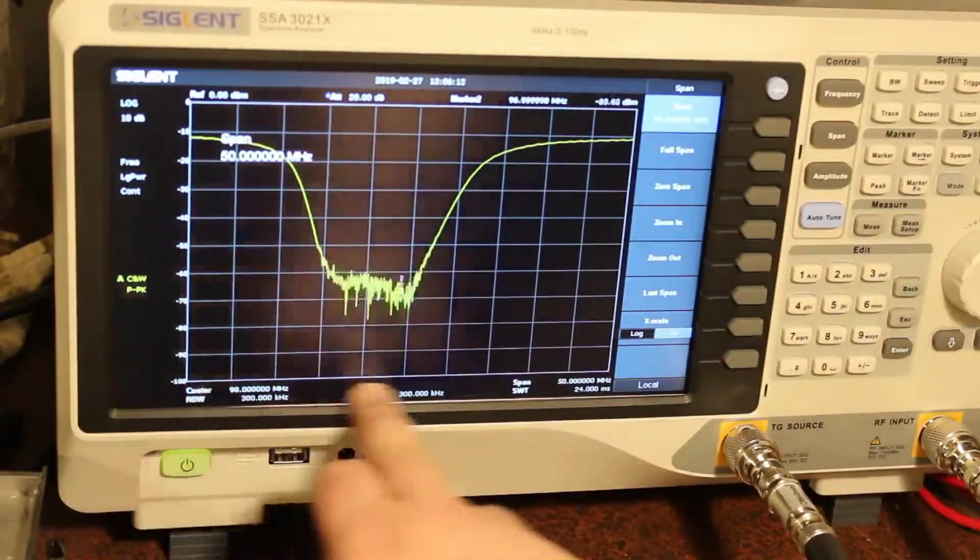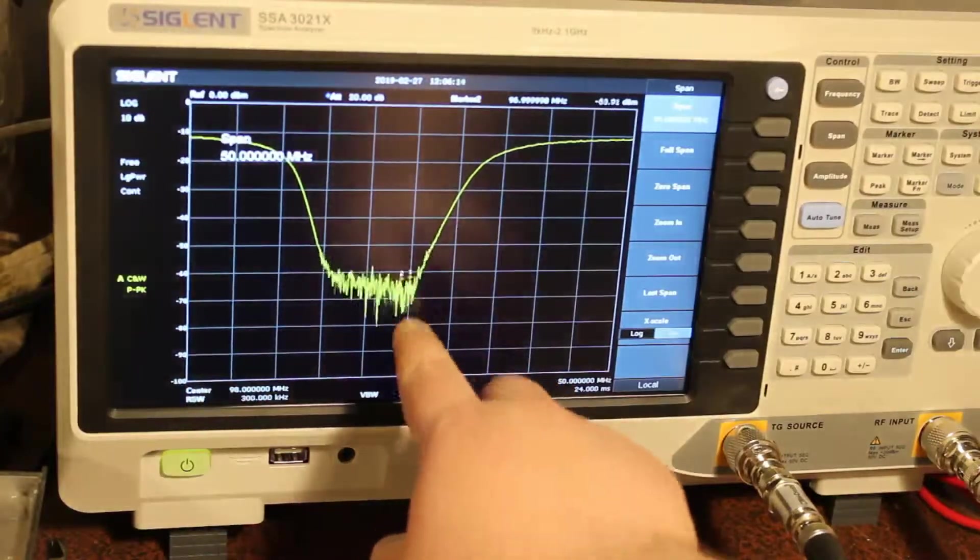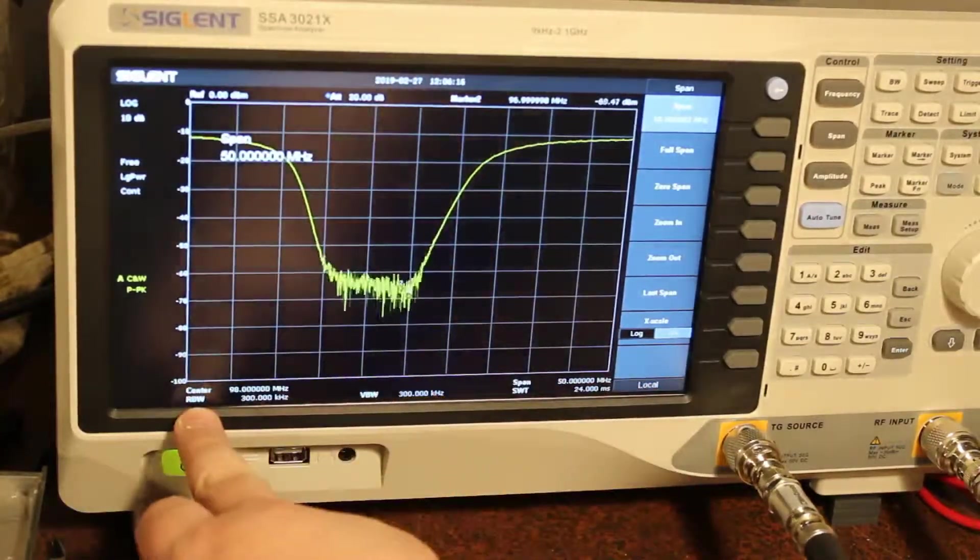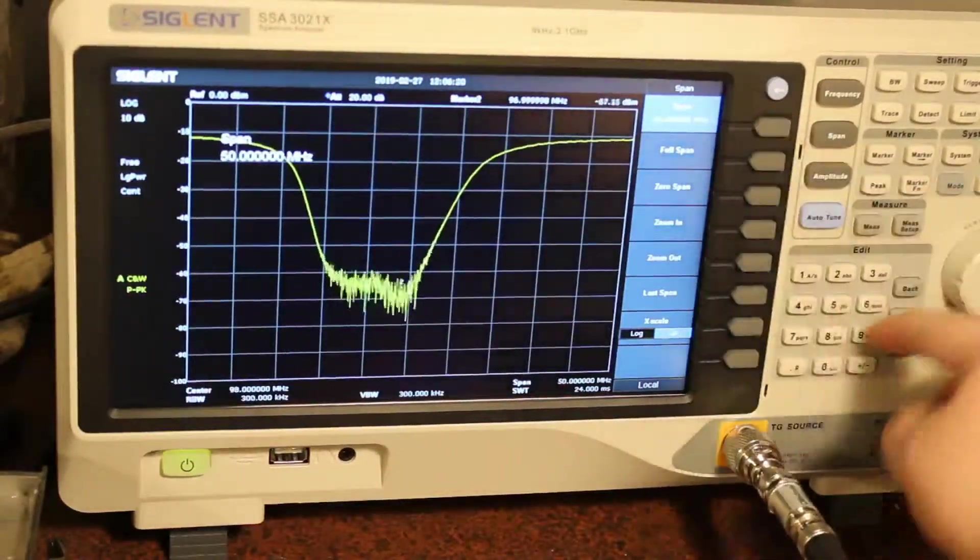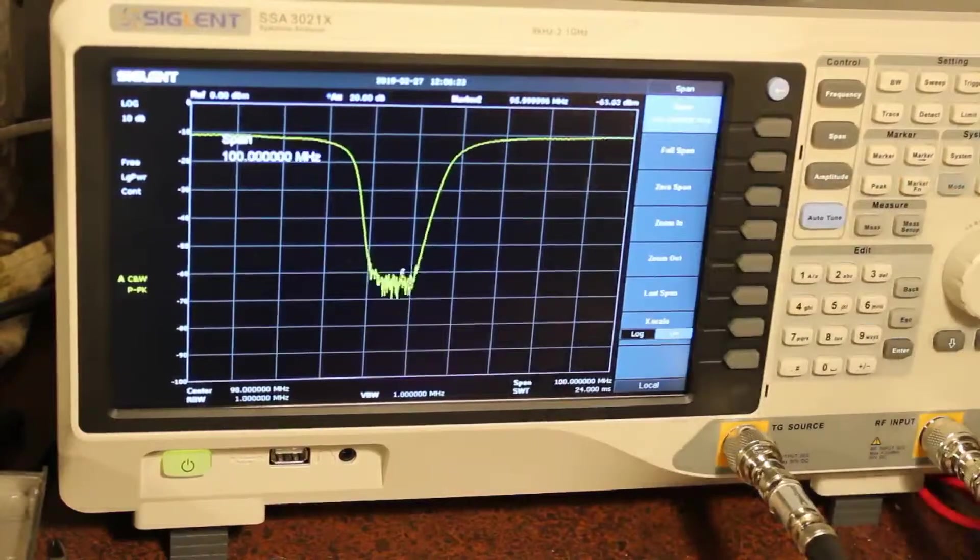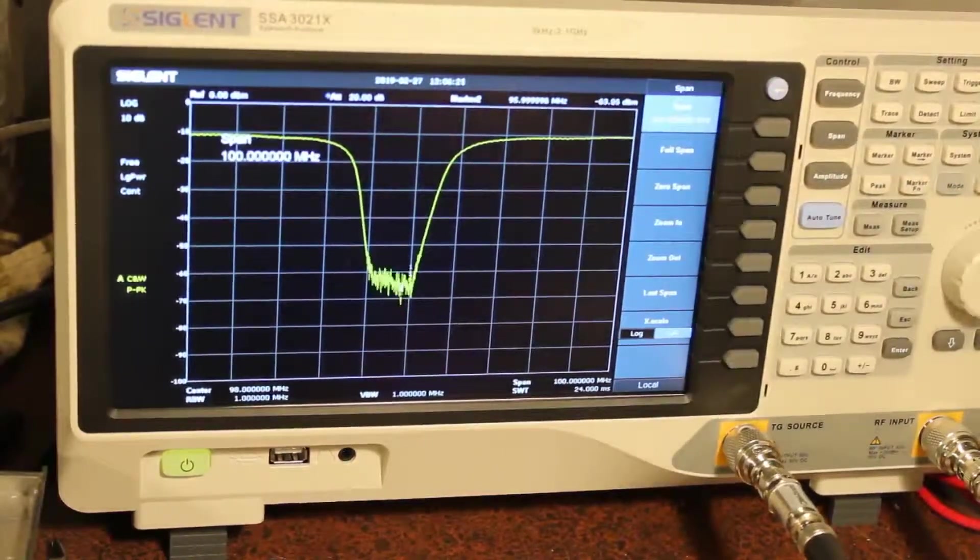But this doesn't tell us the whole story. So let's take a wider look. So we're looking at 50 MHz, right? So I centered it at 98. So plus 25, minus 25 from center frequency. So let's go for a wider span here. Let's go for a 100 MHz span. Okay.